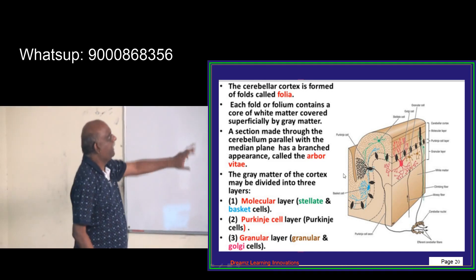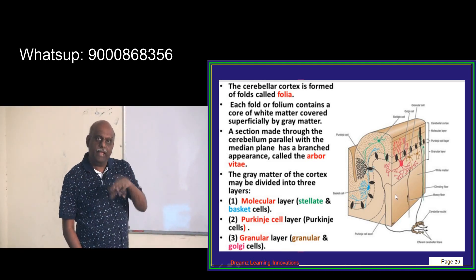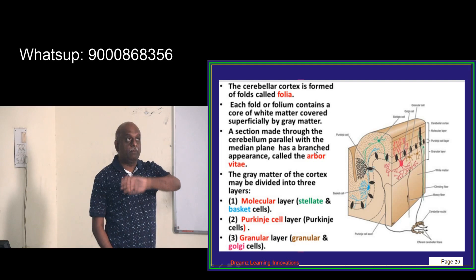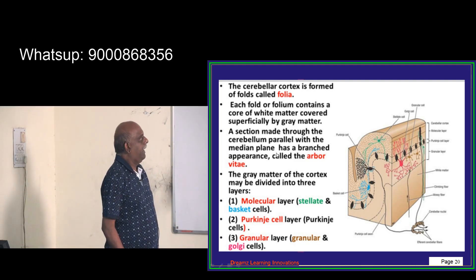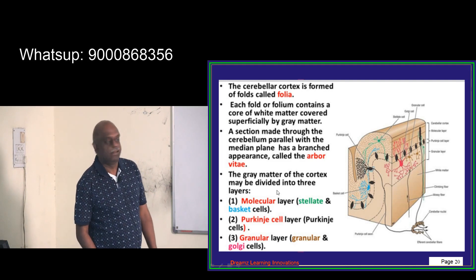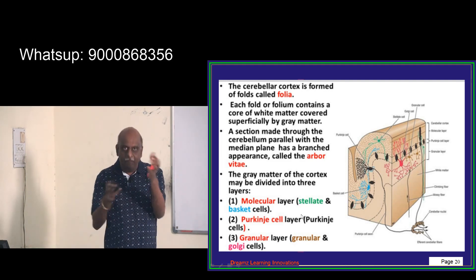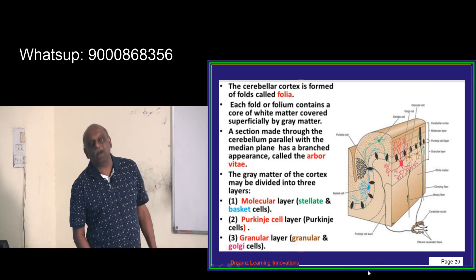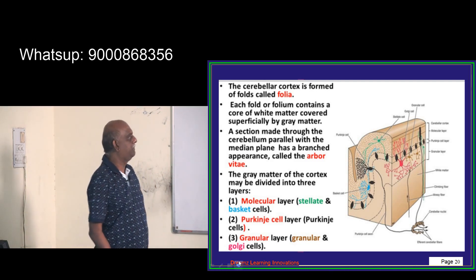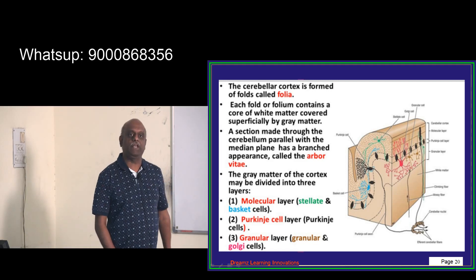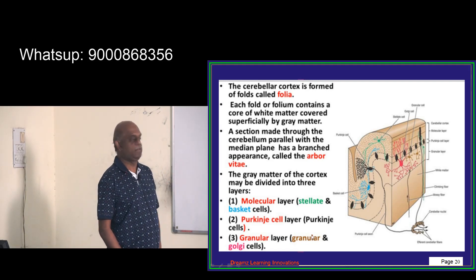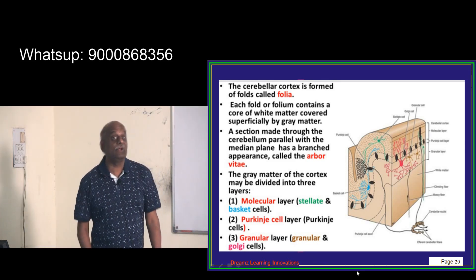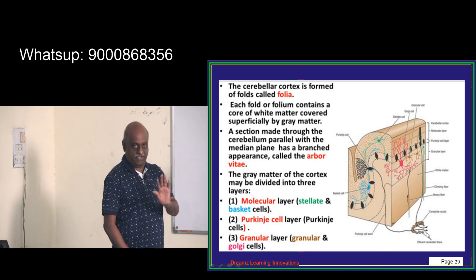The cerebellar cortex has folia, and each folium contains a core of white matter covered superficially by gray matter. In a section through the gray matter, there are three important layers: the molecular layer, the Purkinje cell layer, and the granular cell layer. The molecular layer contains stellate cells and basket cells; the Purkinje cell layer has Purkinje cells; and the granular layer has granular cells and Golgi cells.